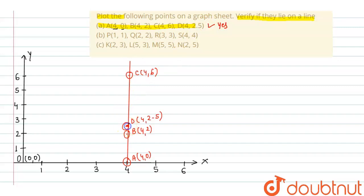This is the points D, this is B. Now, I have to take second part of the question which is saying P(1,1), Q(2,2), R(3,3), S(4,4).